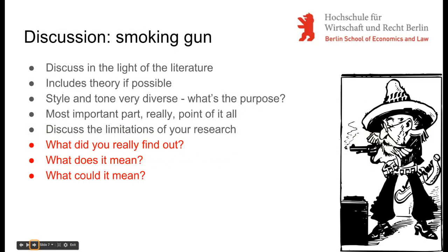In terms of scientific weight, the discussion section is the most important part of the whole paper. You say what your findings mean. If there is relevant literature on your topic, the assumption is that you found it and that you are now in a position to talk about your results in the light of that literature — for example, you might have found something that nobody has discussed before, or something that other authors thought impossible. If there is a theory, this is the place to talk about the meaning of your results in terms of that theory. Perhaps your results require an extension of existing theory, or perhaps the existing theory cannot explain what you have found out.